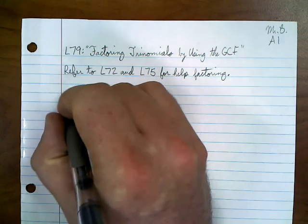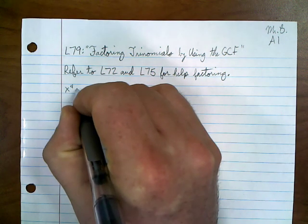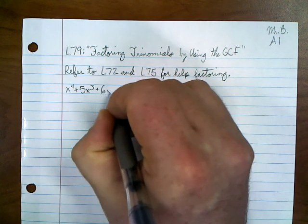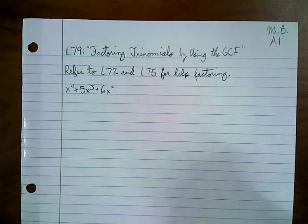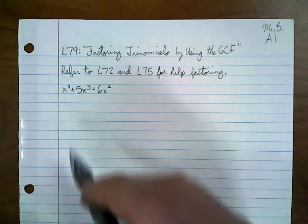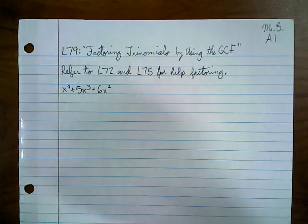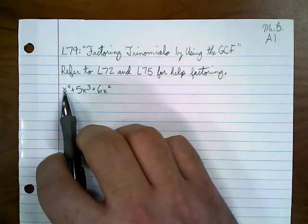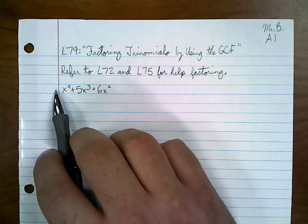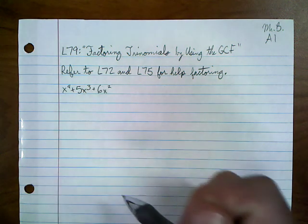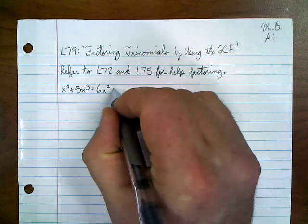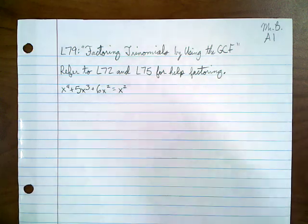Our first example today is x to the 4th power plus 5x cubed plus 6x squared. When we're looking for the GCF, we look at each term and ask about the coefficients as well as the variables. Looking at the numbers — 1, 5, and 6 — there's nothing I can pull out of each of these. So then looking at the variables: x to the 4th, x to the 3rd, and x squared, I can pull x squared out of each of these.